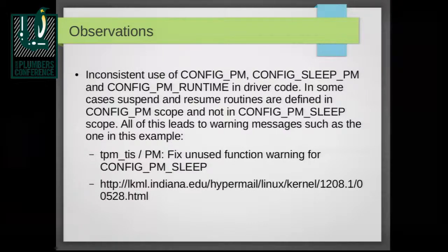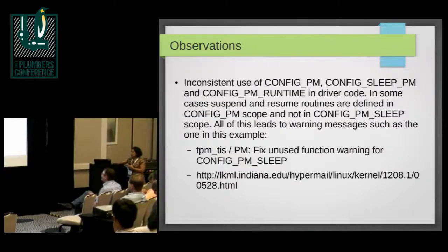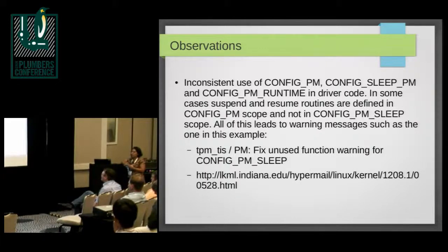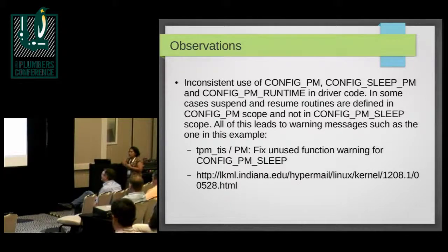As I was going along, I had a few issues. Freeze is one of those that I encountered and that has a simple solution. One of the ones I'm running into is the inconsistent use of different config values. In some cases when you go and add dev PM interfaces, you will trip a lot of warnings based on what options are turned on.